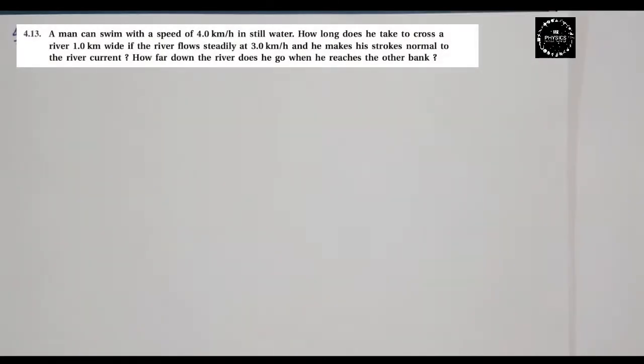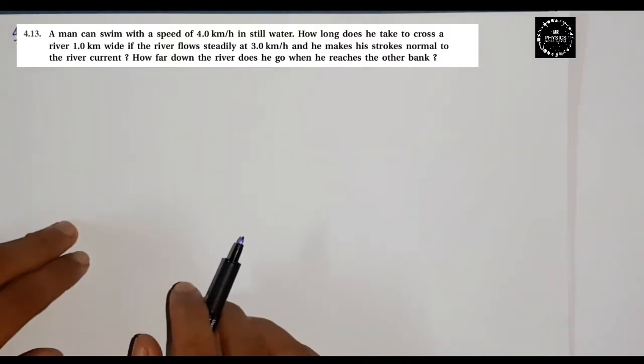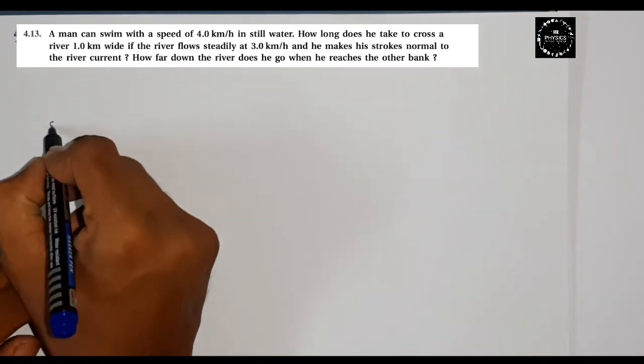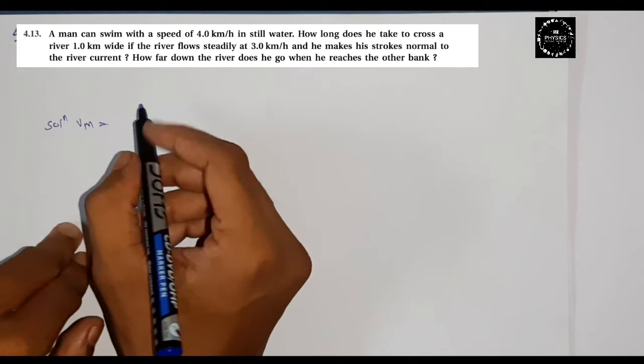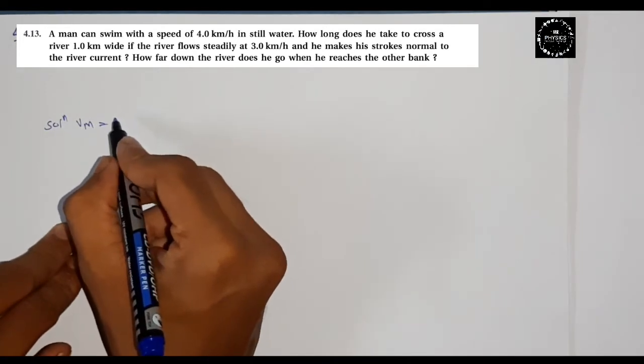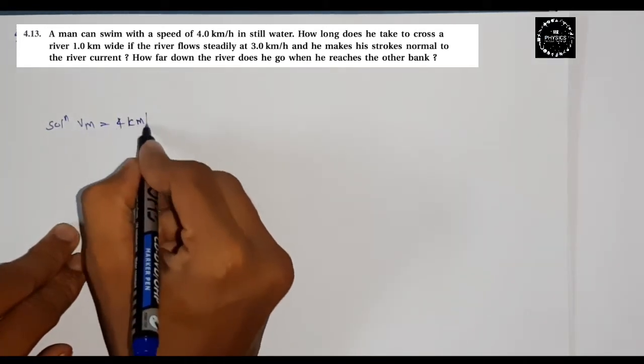Hello students, Example 4.13. Look at the question: A man can swim with a speed of 4 kilometers per hour. This is the speed of the man, so we can say that Vm, the solution I am writing here, is 4 kilometers per hour.